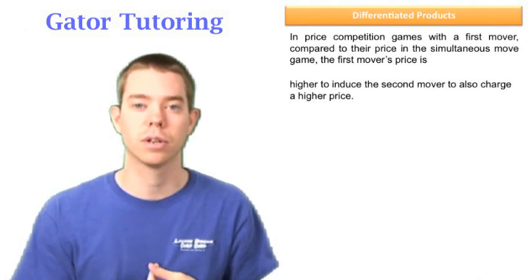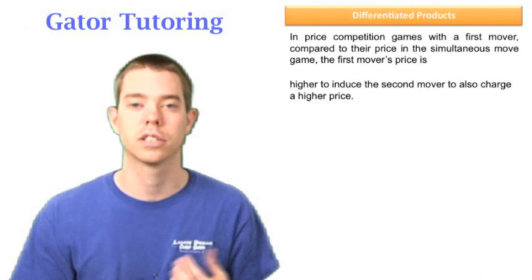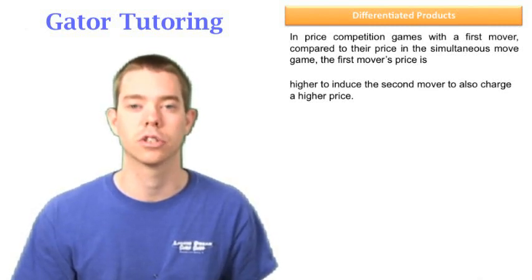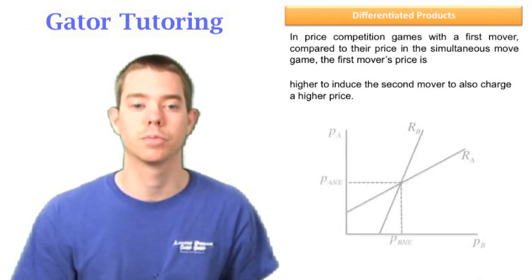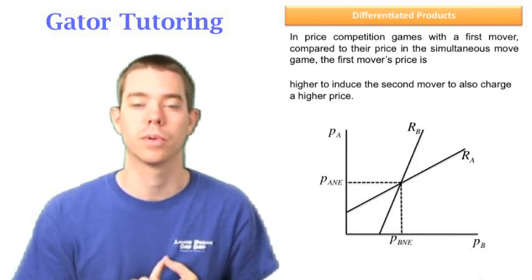Again, everybody wants there to be a first mover, and ultimately everybody wants to be second mover. Let's take a look at the reaction function graph to show what's happening in a first mover game. In a simultaneous move game, we know they cross here where the reaction functions cross.